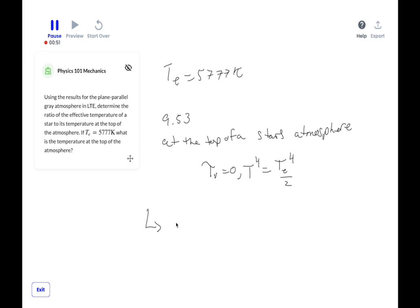Which means that T divided by Te equals one half to the one fourth power, and if you plug that in your calculator, you get about 0.841.